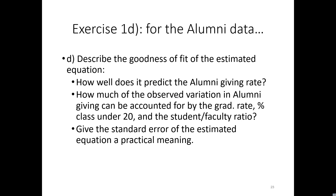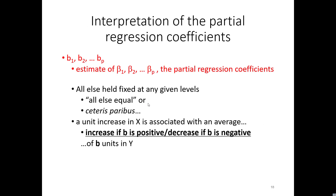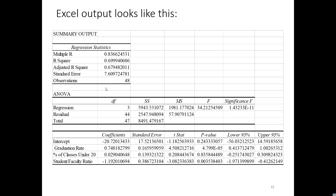Let's go back and look at the output for the alumni giving example. Because we have multiple variables, we're interested in adjusted R-squared, and we see that it's 0.67948 — roughly 0.68. So 68% of the variation in alumni giving, which is our dependent variable, is explained by this model.